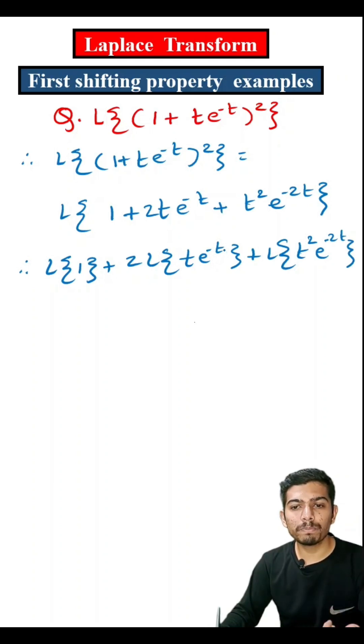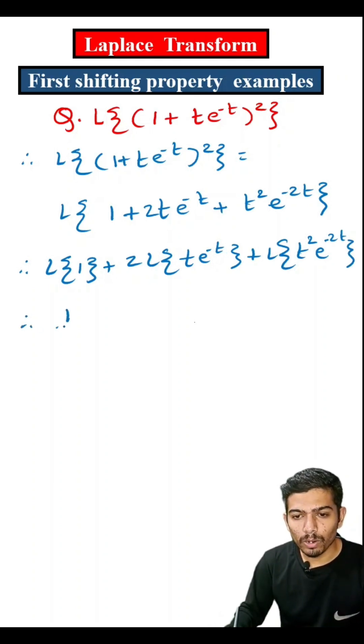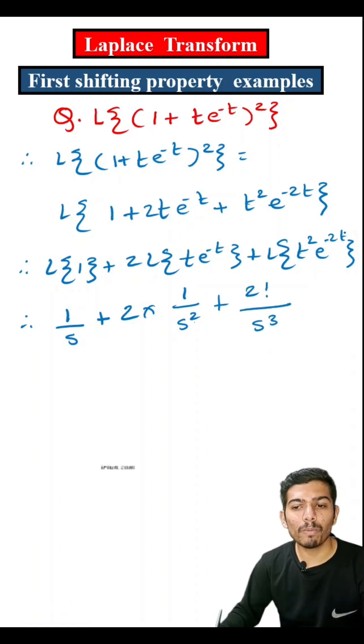Now, we will use first shifting property. Therefore, 1 upon s is Laplace transform of 1 and 2 into 1 upon s square is Laplace transform of t plus 2 factorial divided by s cube is Laplace transform of t square.